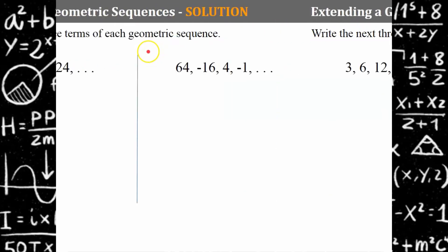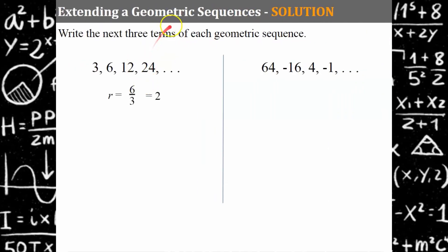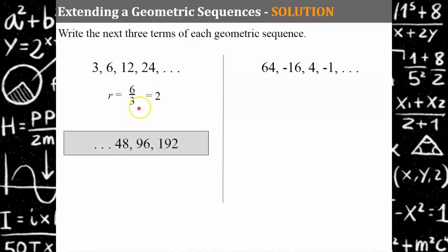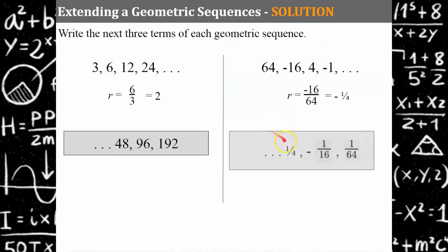Welcome back. For the first sequence, 6 divided by its previous term gives a common ratio of 2 — you can also see it's multiplied by 2 each step. So: 24 × 2 = 48, 48 × 2 = 96, 96 × 2 = 192 — those are the next three terms. For the second sequence, the common ratio is −16 divided by its previous term, giving −1/4. Multiplying: −1 × (−1/4) = 1/4, then 1/4 × (−1/4) = −1/16, and −1/16 × (−1/4) = 1/64.